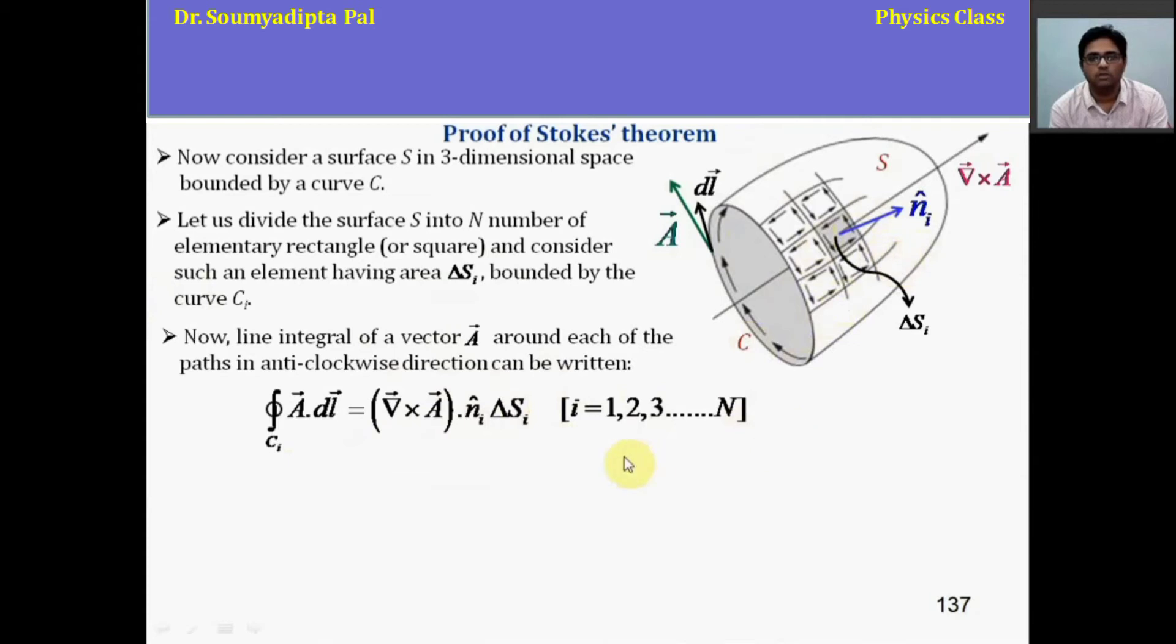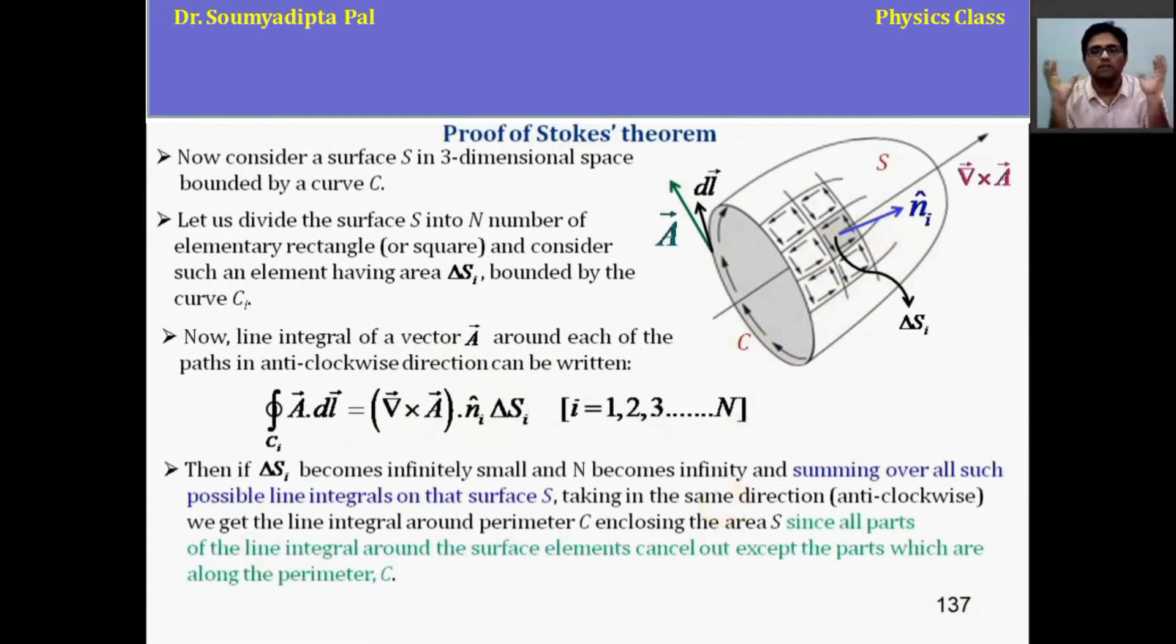And i varies from 1 to n. Then, if del Si becomes infinitely small and n becomes infinitely large in number, then summing over all such possible line integrals on the surface S in the same direction, same anticlockwise or positive direction, we get the line integral around perimeter C which encloses the total surface S because all parts of line integral around the surface elements cancel out except the parts which are along the perimeter C that doesn't cancel out. And we get this complete form of Stokes theorem.